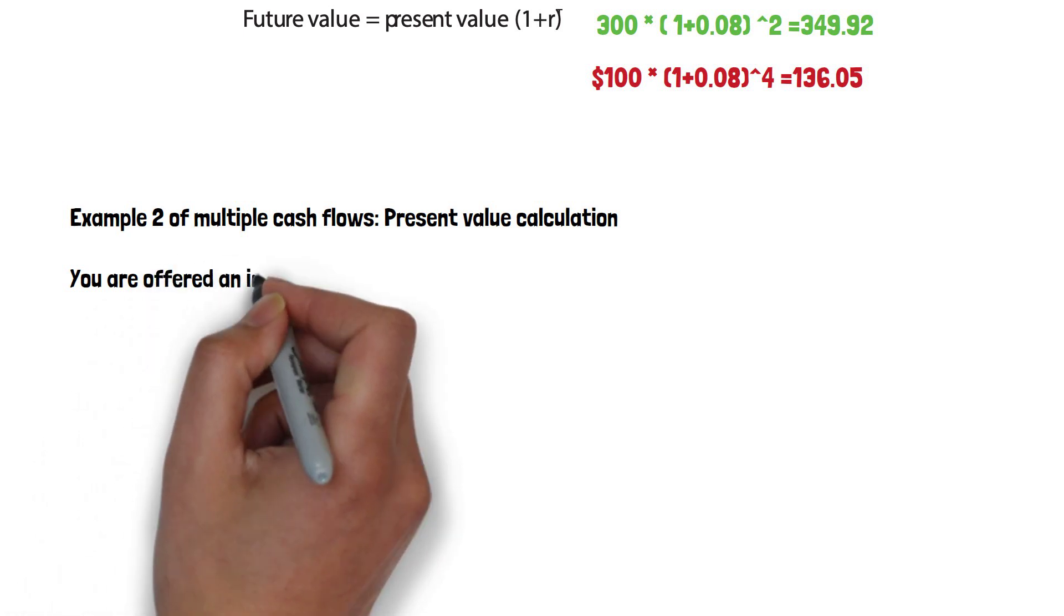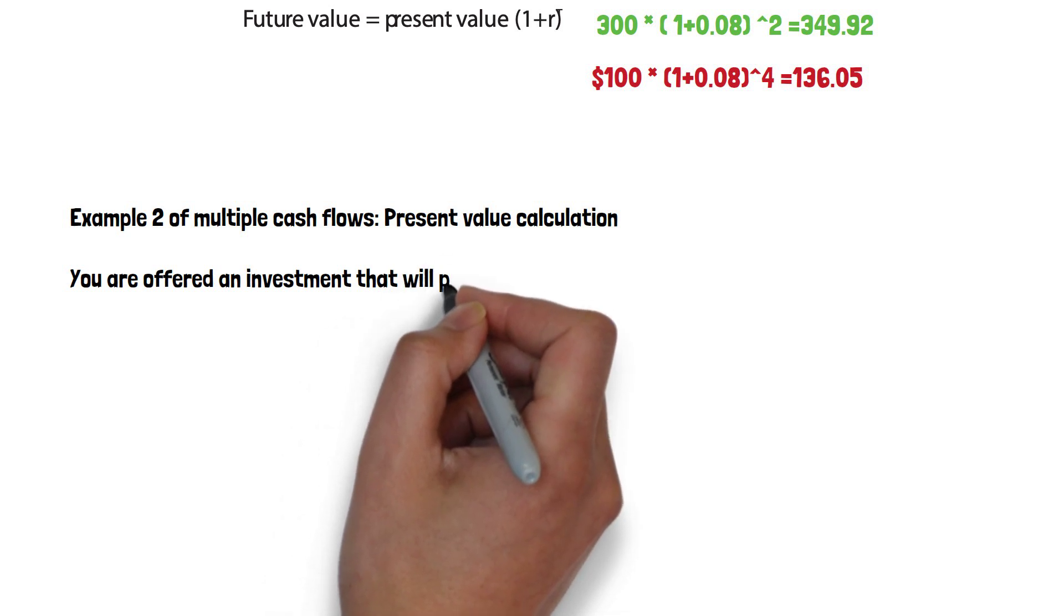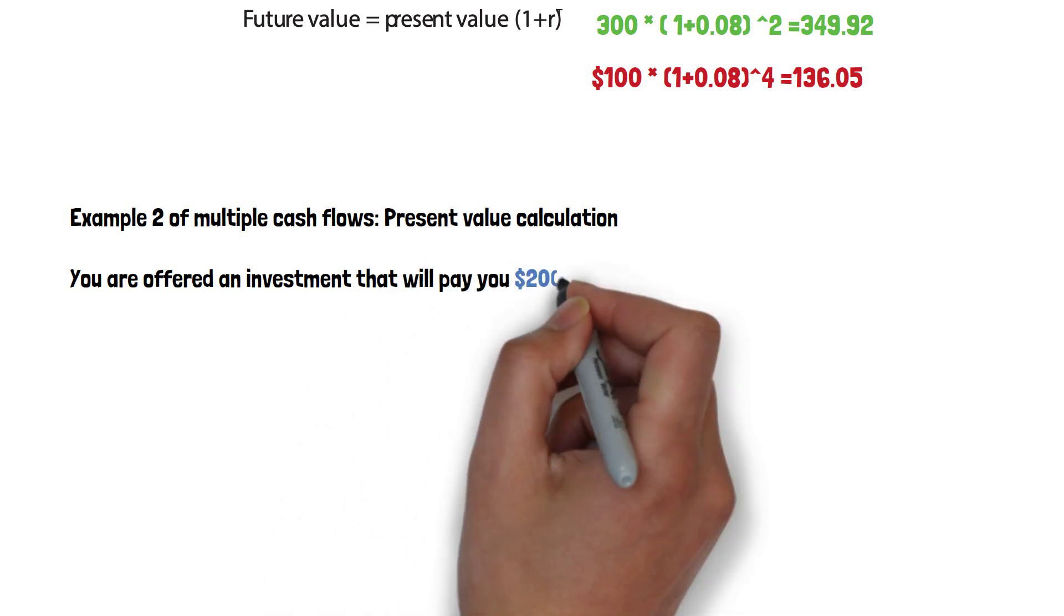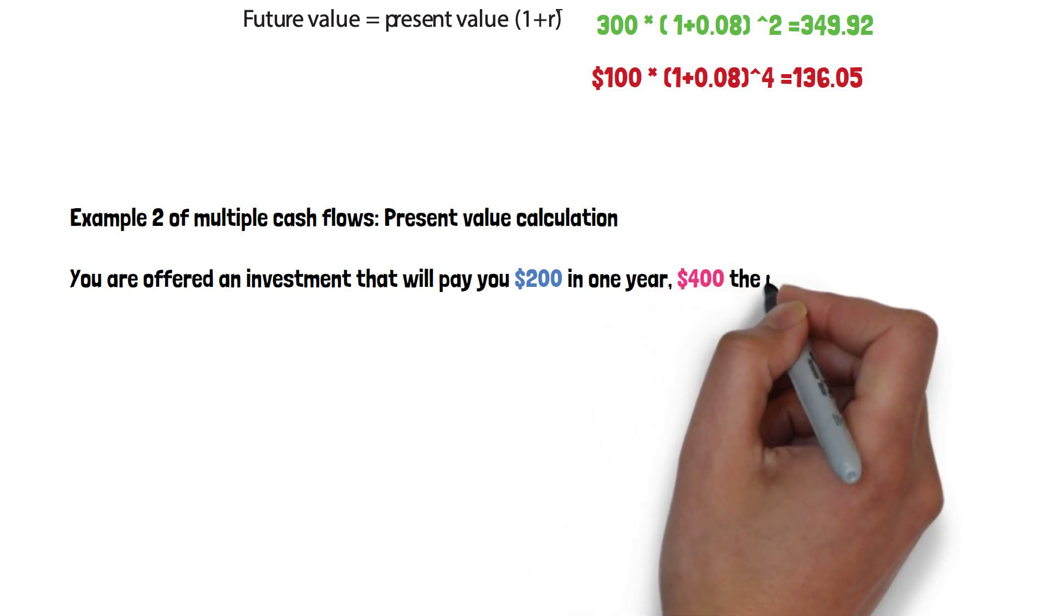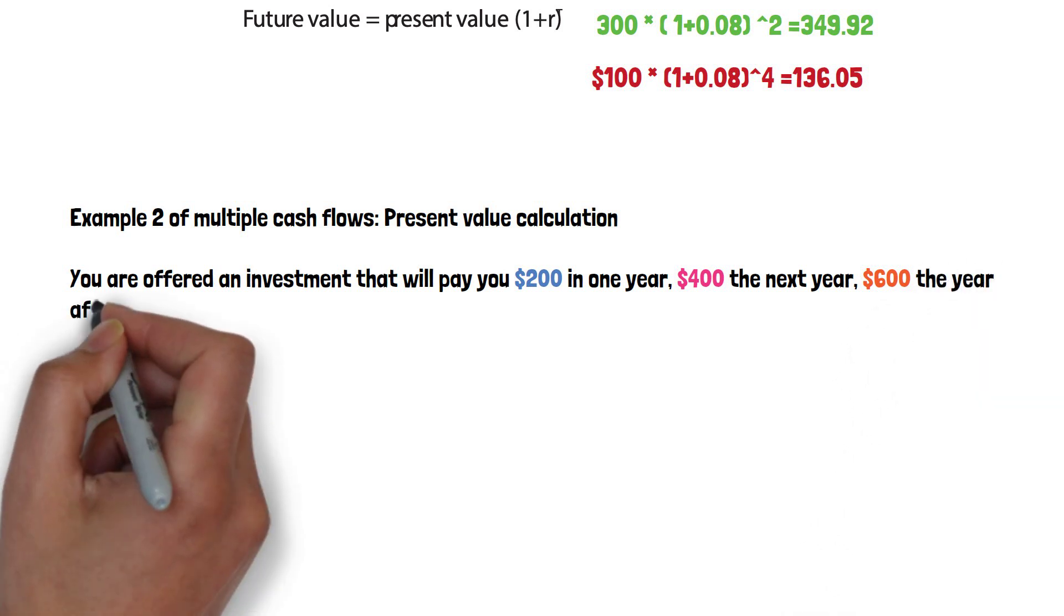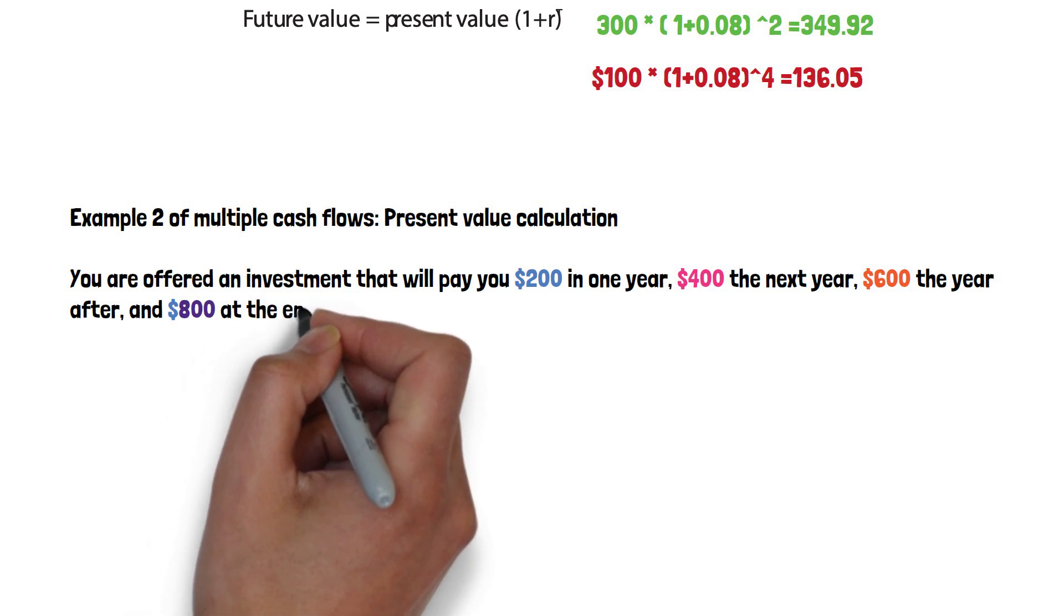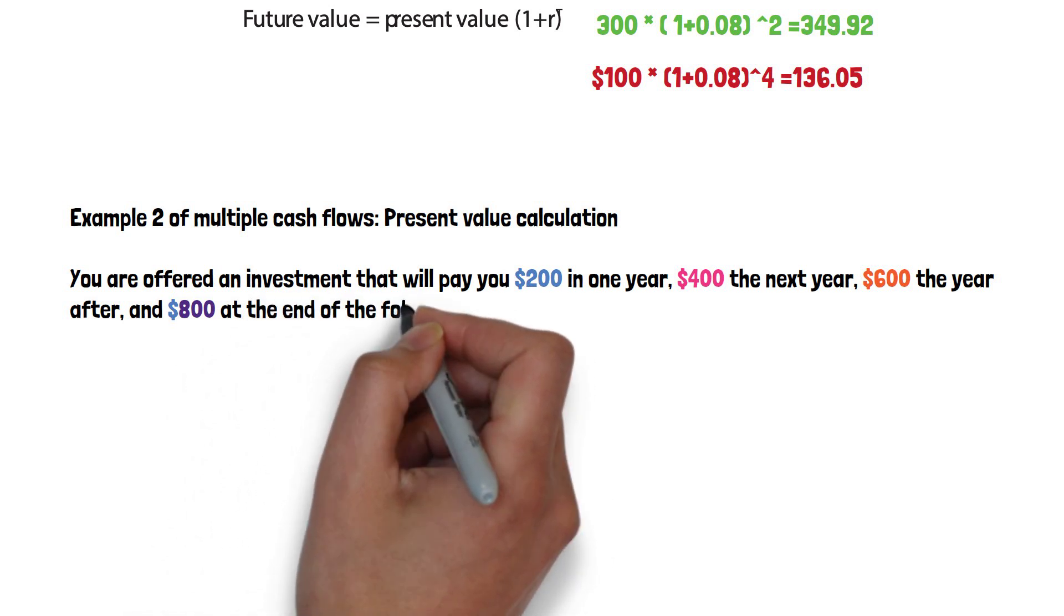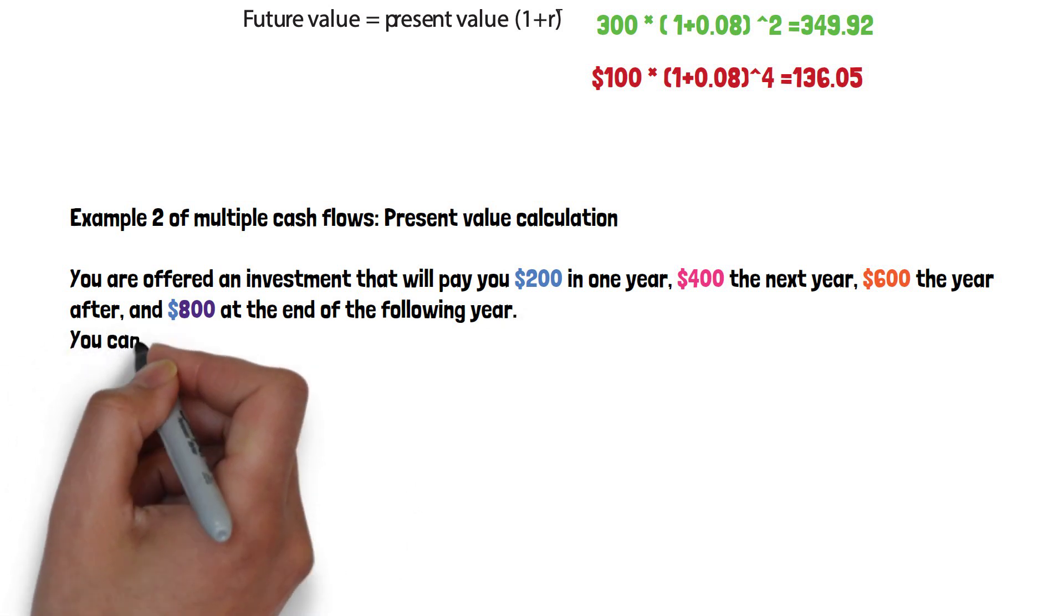Suppose you are offered an investment that will pay you $200 in one year, and then $400 the next year, and $600 the year after, and $800 at the year end of the following year. Okay, four cash flows in the future.